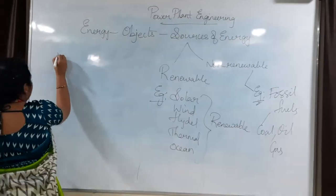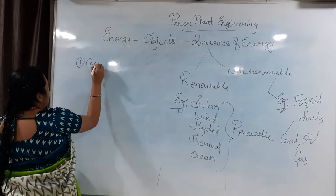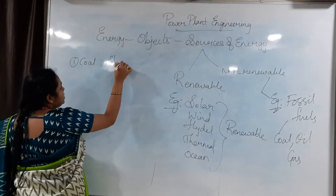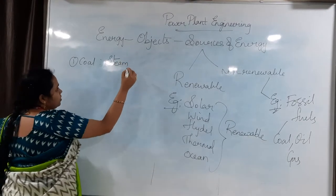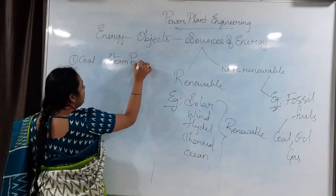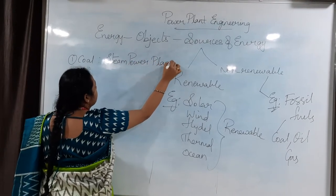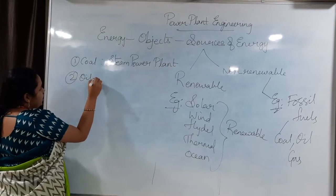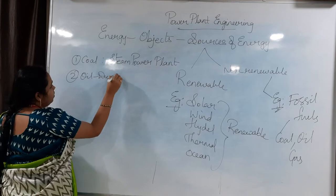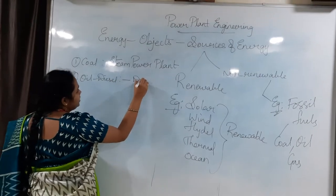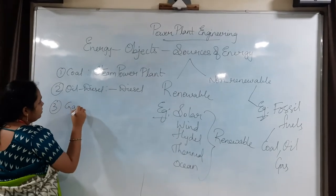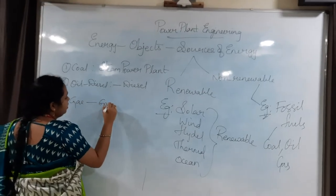In this subject, first we will be dealing with coal. If we are producing electricity by using coal as a fuel, we will be constructing a power plant — that is known as a steam power plant. If we are using oil such as diesel, it is called a diesel power plant. And with gas, it is called a gas plant.